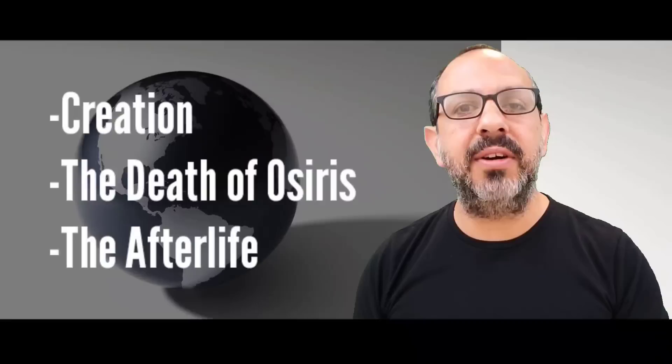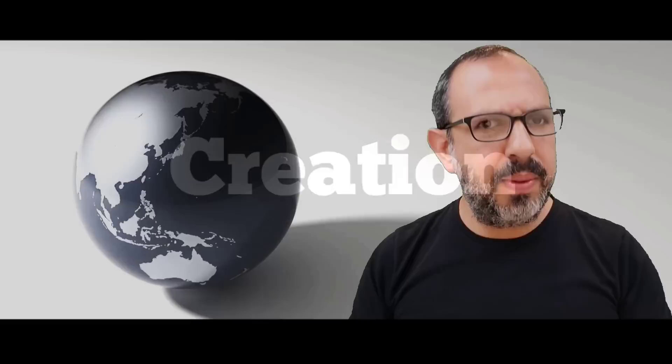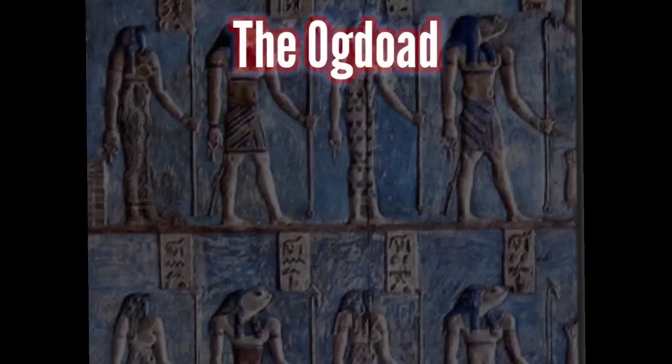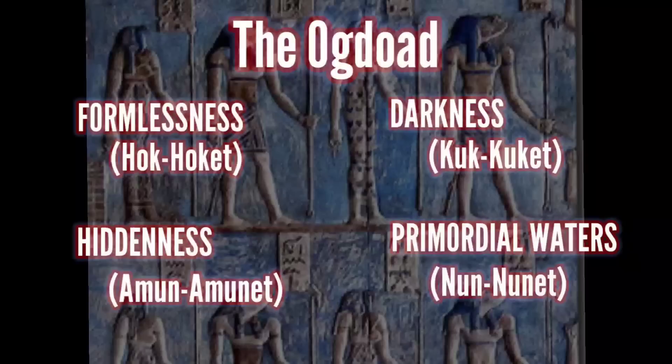Let's start with Creation. In the beginning, there were eight primordial gods that represented chaos, called the Ogdoad. They consisted of four sets of male-female pairs, often depicted as frogs, representing formlessness, darkness, hiddenness, and the primordial waters. You'll notice that the Egyptian gods' names are shown below each term, and each name that ends in a T is female.